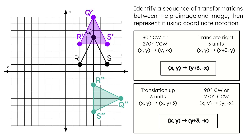It may seem like we just switched the order of the transformations, but taking a closer look, we translated right 3 units in the first sequence and up 3 units in the second sequence. The translations are in different directions, and their individual coordinate notations are also different. Although we used different transformations in each of these sequences, the final coordinate notation still simplified to be the same.